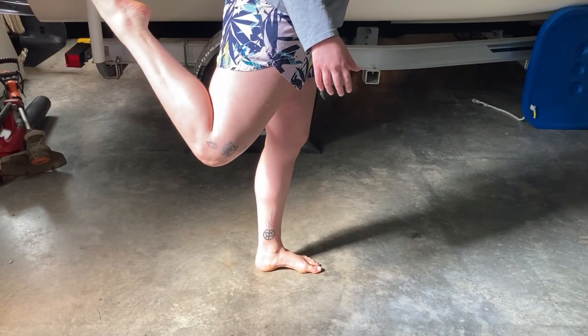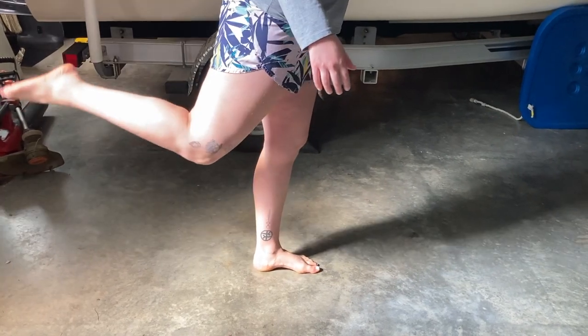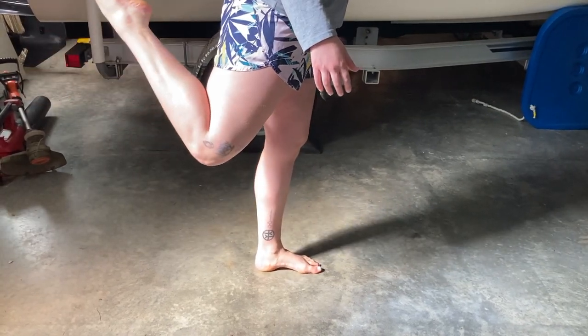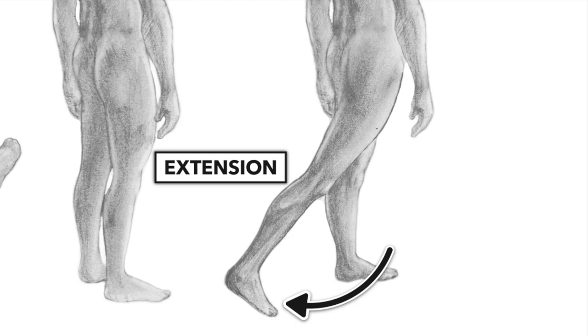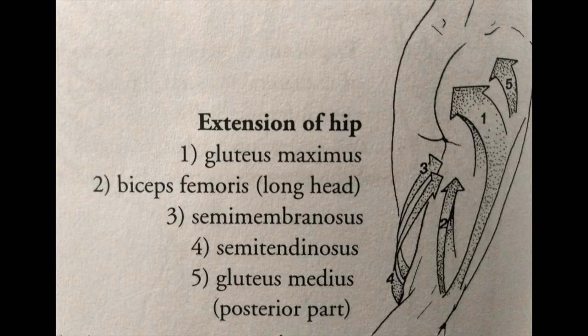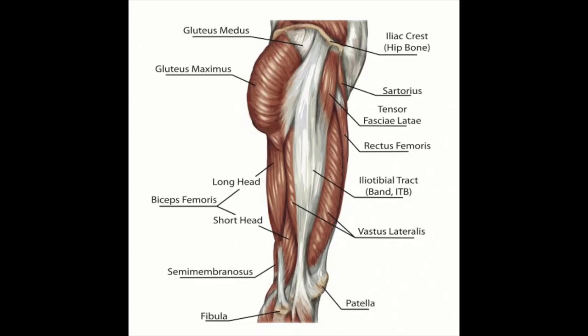The second step is swinging the kicking leg back. This motion involves extending the hip and flexing the knee. With hip extension, the gluteus maximus and the hamstrings are primarily responsible. They are working synergistically while contracting to produce this movement.